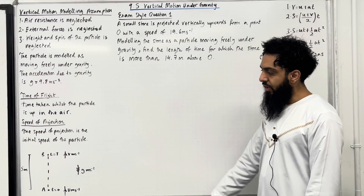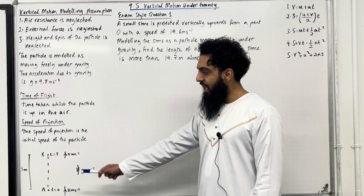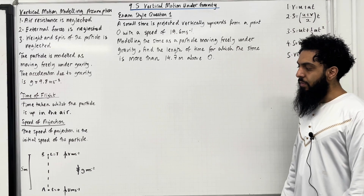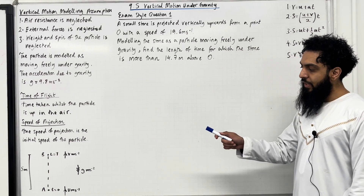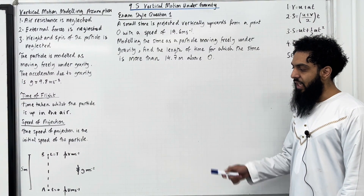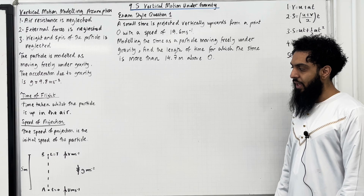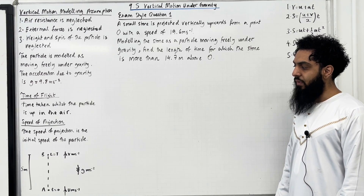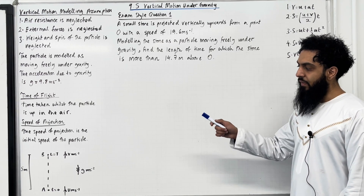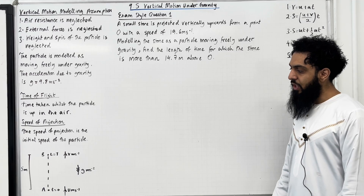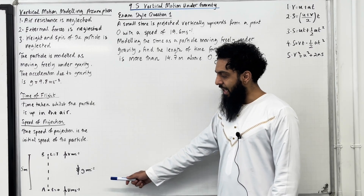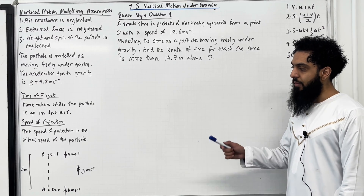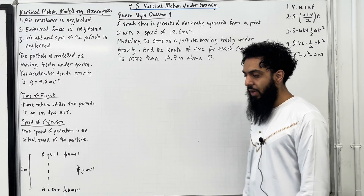Consider the following diagram. We've got point A and we've got point B. We are looking at the motion A to B. At A, the time t is equal to 0 and the initial velocity is u metres per second. At B, the time t is equal to capital T and the final velocity is v metres per second. The acceleration due to gravity acts vertically downwards and the displacement from A to B is s metres.